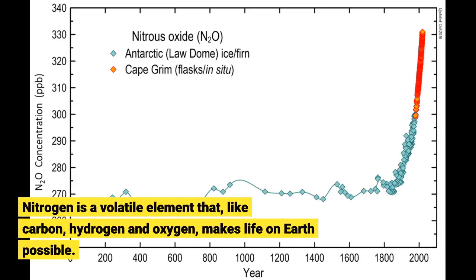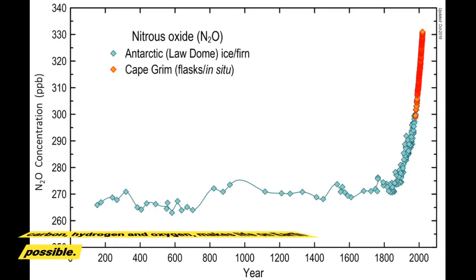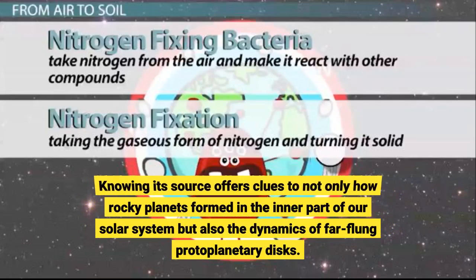Nitrogen is a volatile element that, like carbon, hydrogen and oxygen, makes life on Earth possible. Knowing its source offers clues to not only how rocky planets formed in the inner part of our solar system but also the dynamics of far-flung protoplanetary disks.